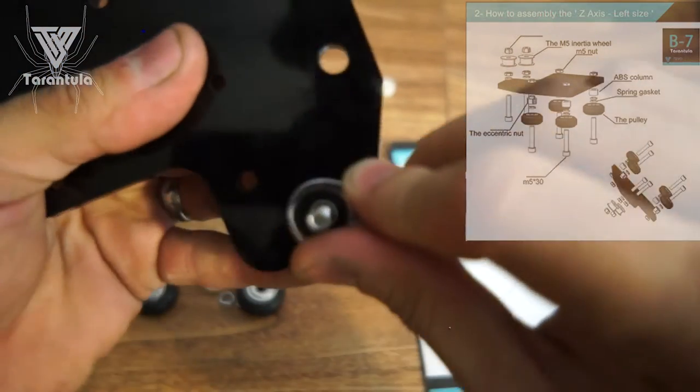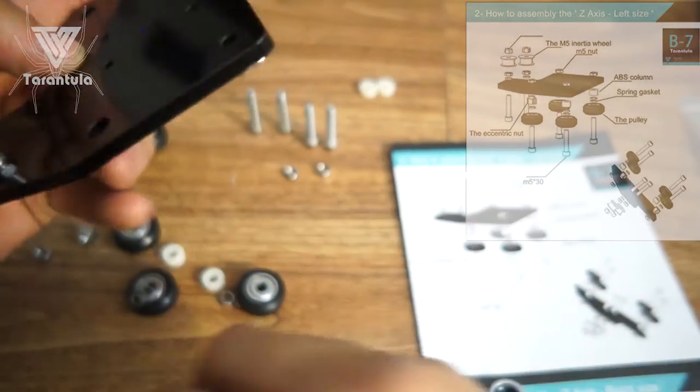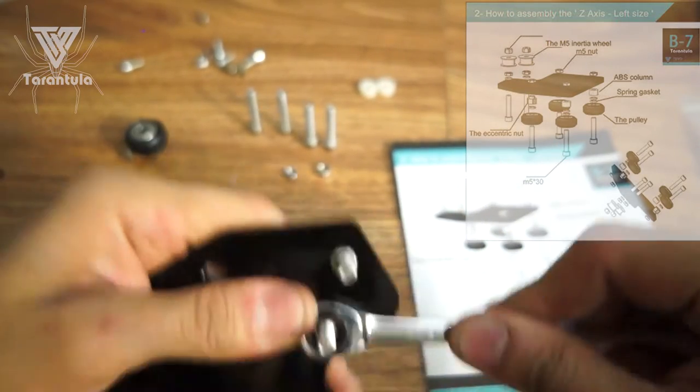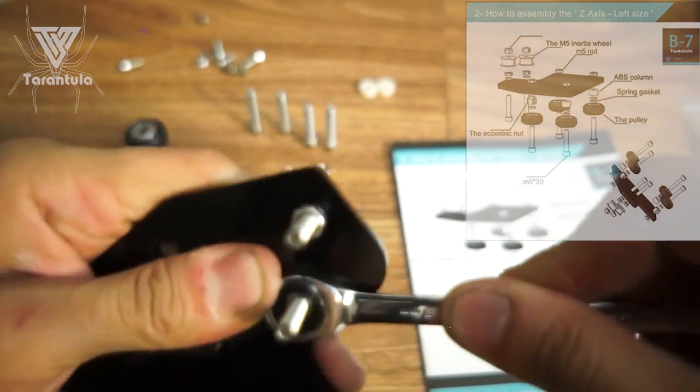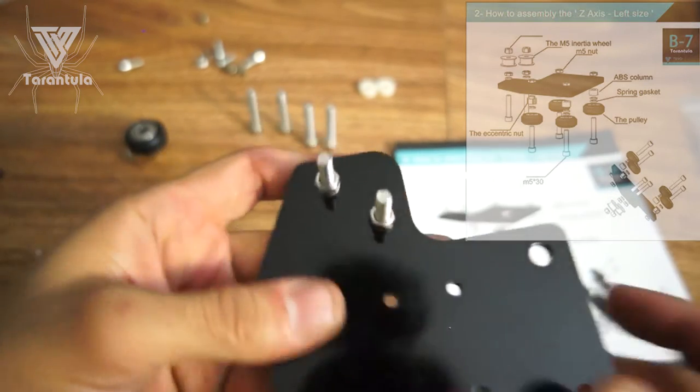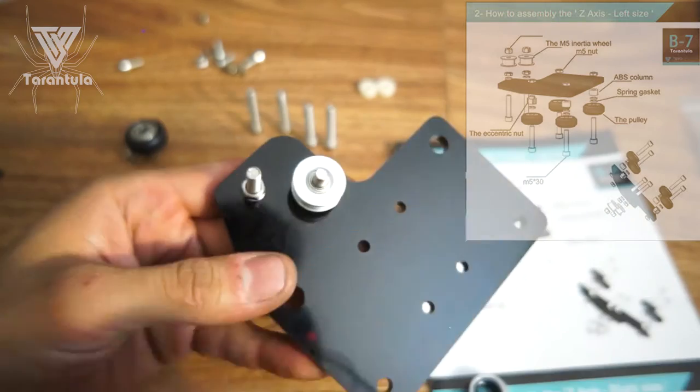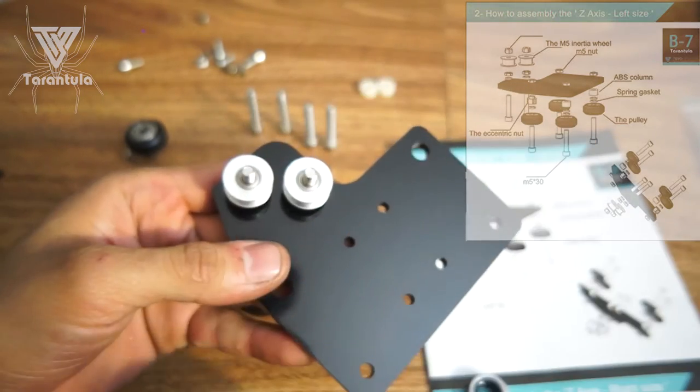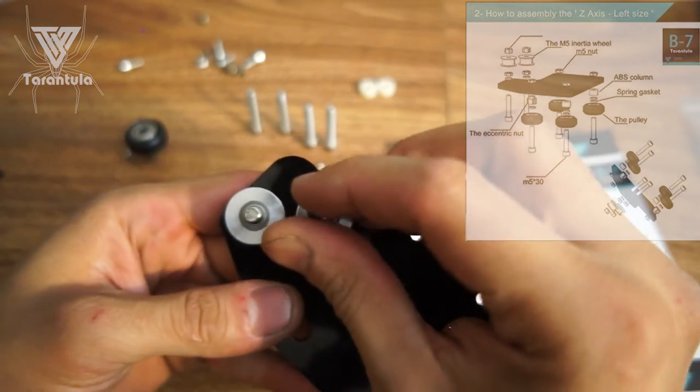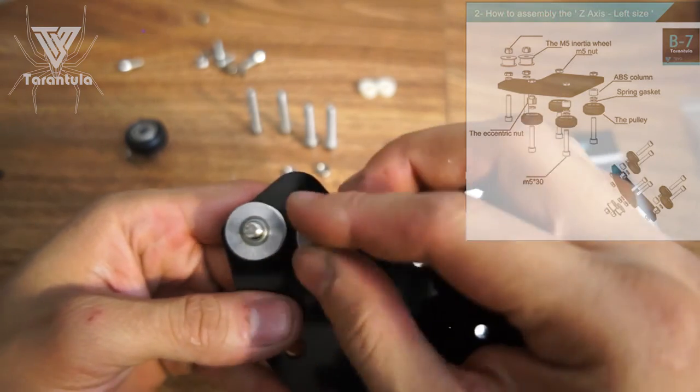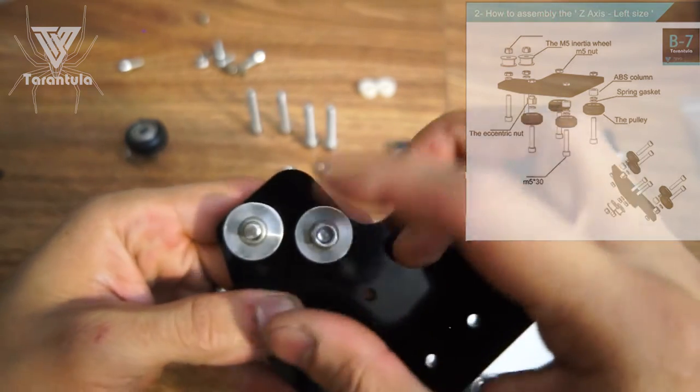You can go ahead and kind of snug these ones just enough to where they're tight. Alright, cool, so those are nice and tight and I'm going to go ahead and just put these pulleys bolts on here and then put these lock bolts here, these nylon locking bolts.